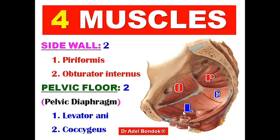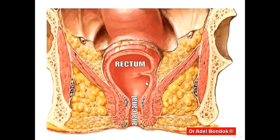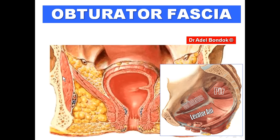The pelvic diaphragm is formed mainly by the levator ani. In a coronal section, this is the pelvic floor (pelvic diaphragm) and this is the side wall of the pelvis. Obturator internus forms the side wall, and levator ani forms the pelvic diaphragm.